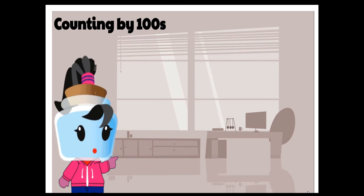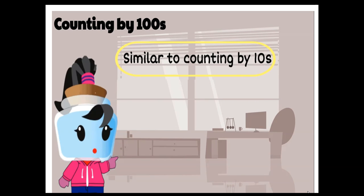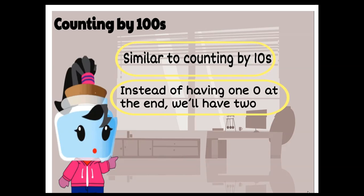Lastly, let's count by 100s. It's similar to counting by 10s. Instead of having 0 at the end, we will have 2 zeros.